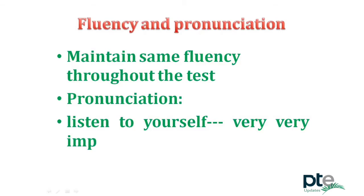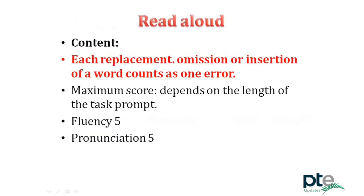In read aloud, marks are awarded on the basis of content, fluency, and pronunciation. In content, each replacement, omission, or insertion of a word counts as one error. So try not to replace, delete, miss, or insert any word, as each will be counted as one error. Fluency marks are 5 and pronunciation marks are also 5 in each section.